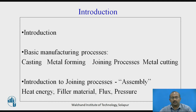The welding process, which carries out an assembly, can use some parameters like heat energy, filler material, flux material, and pressure. Out of these four, few of them may be used in combination as per the requirement and type of welding process.